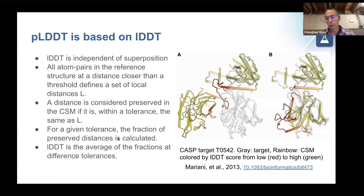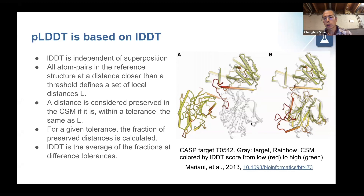To understand pLDDT, we must understand LDDT first. The motivation to develop a measure such as LDDT can be illustrated on the figure on the right. The gray structure is a CASP target reference, and the colored ones are the CSMs. Although the domain structures may be quite accurate, you can superpose the CSM upon the target reference for both domains independently. To overcome this problem, all atom pairs in the reference structure at a distance closer than a threshold define the local distance set L. A distance is considered preserved in the CSM if it's within a tolerance, and LDDT is simply the average of the preserved fraction at different tolerances.